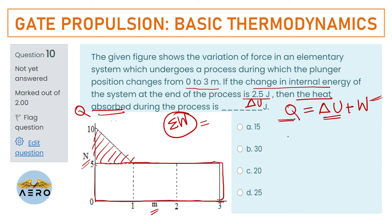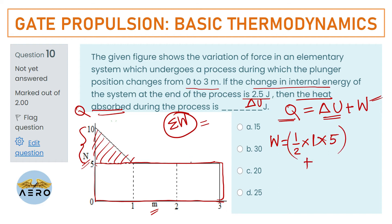For the triangular area: ½ × base × height = ½ × 1 m × (10 − 5) N = 2.5 J. For the rectangular area: length × height = 3 m × 5 N = 15 J.